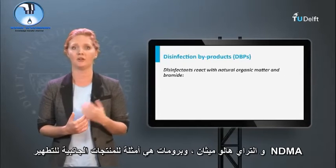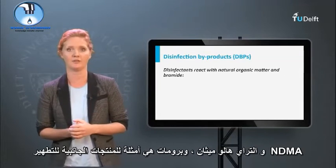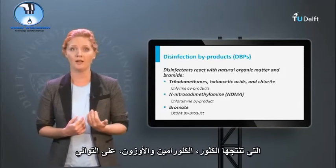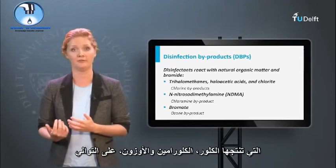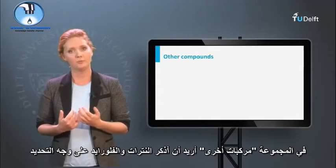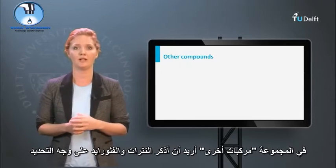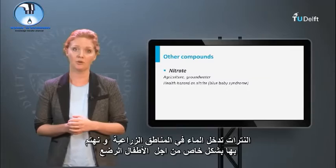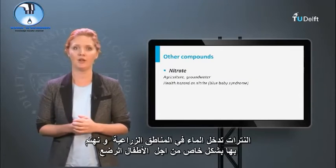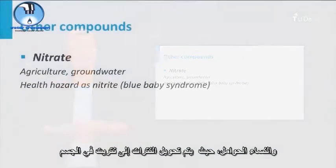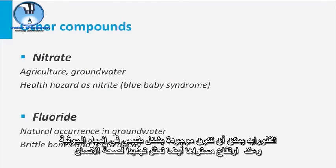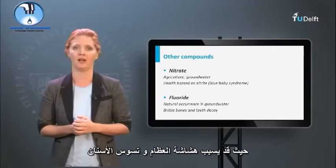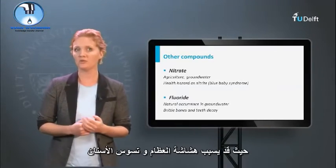Trihalomethanes, NDMA, and bromide are examples of disinfection byproducts produced by chlorine, chloramine, and ozone respectively. In the group of other compounds, nitrate and fluoride deserve specific mention. Nitrate enters the water in areas with agriculture and is particularly of concern for babies and pregnant women, as nitrate is transformed to nitrite in the body. Fluoride can be naturally present in groundwater and at elevated levels is also a threat to human health, as it may cause brittle bones and tooth decay.